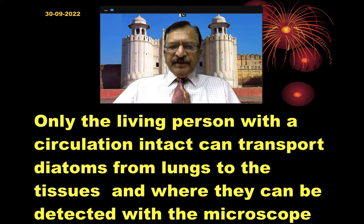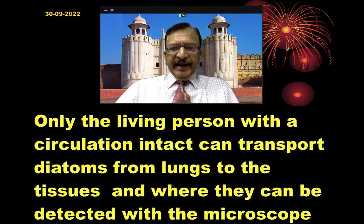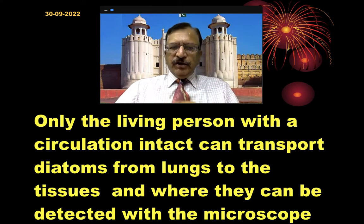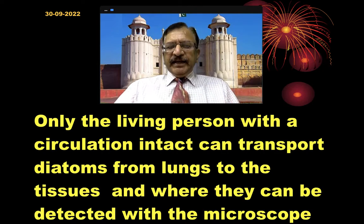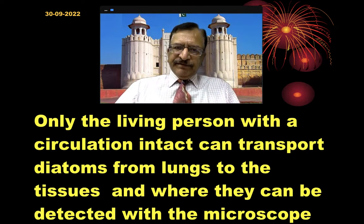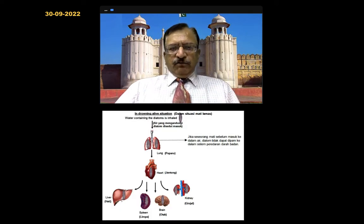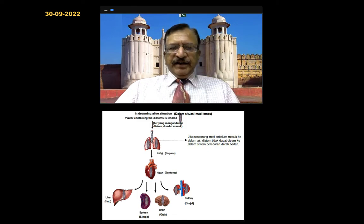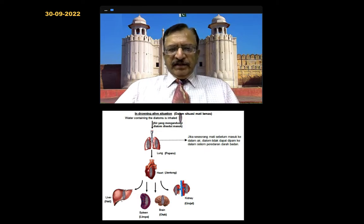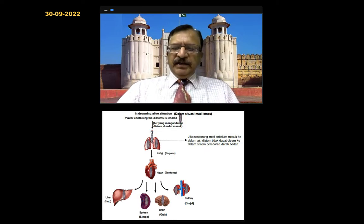Only a living person with circulation intact can transport diatoms from the lungs to the tissues, where they can be detected with the help of a microscope. The process is that water is ingested, goes into the lungs, enters into the circulation, and then travels to the liver and other organs where it can be detected.